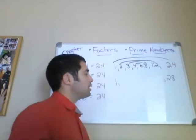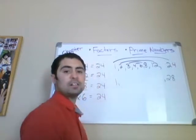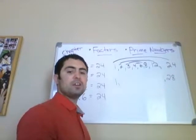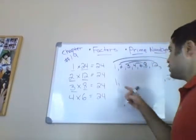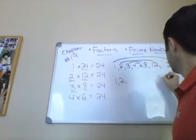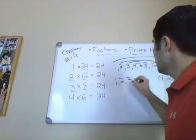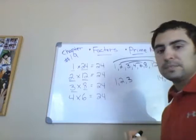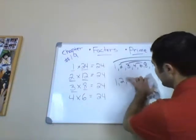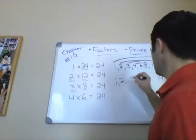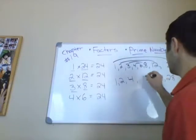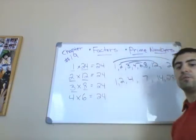Go ahead and do this next problem by yourself — find all the factors, rainbow style, for 28. Pause your computer and when you have your answers, restart. All right, so we know that 1 and 28 are factors. What pairs with 2? That is 14 — 2 times 14 is 28. What pairs with 3? You do not have a whole number that pairs with 3, so we're not going to use 3 as a factor — erase it. And 4 pairs with 7 to get 28. So those are the factors for 28.